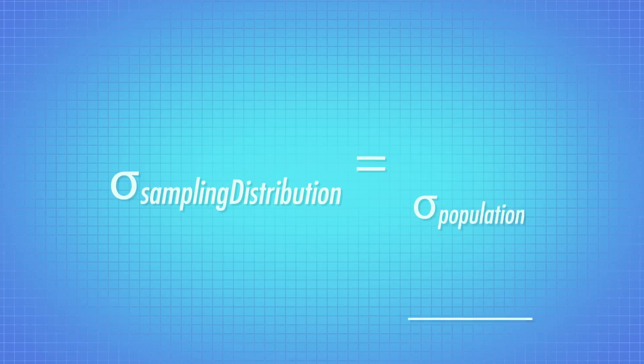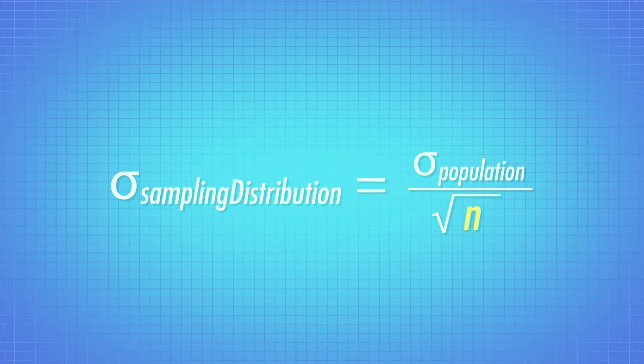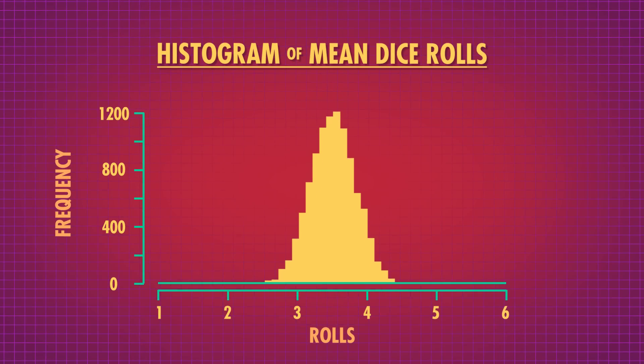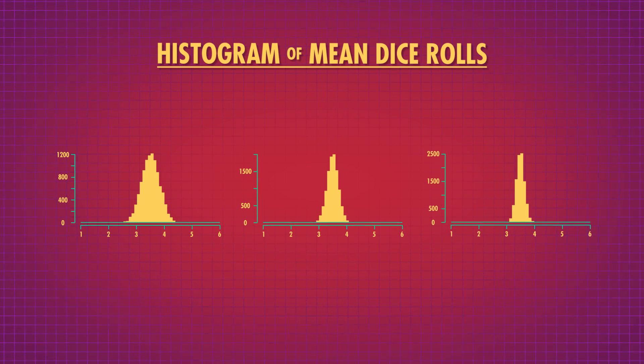The standard deviation of a distribution of sample means is still related to the original standard deviation. The bigger the sample size, the closer your sample means are to the true population mean, so we need to adjust the original population standard deviation to reflect this. The way we do it mathematically is to divide by the square root of n, our sample size. Since we divide by the square root of n, as n gets big, the standard deviation sigma gets smaller — which we can see in these simulations of sampling distributions of size 20, 50, and 100. The larger the sample size, the skinnier the distribution of sample means.